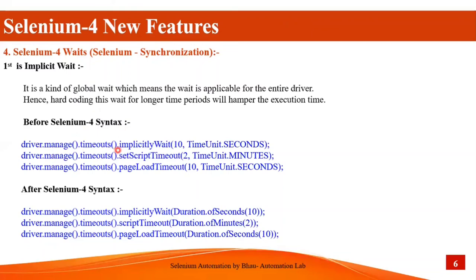Before Selenium 4, the syntax for implicit wait is: driver.manage().timeouts().implicitlyWait(10, TimeUnit.SECONDS). For script timeout you specify seconds or minutes using TimeUnit. Page load timeout similarly uses TimeUnit.SECONDS. After Selenium 4, the syntax changes slightly: driver.manage().timeouts().implicitlyWait(Duration.ofSeconds(10)). You now provide Duration.ofSeconds or Duration.ofMinutes. Script timeout and page load timeout similarly require Duration.ofSeconds — this is the syntax change in implicit wait.